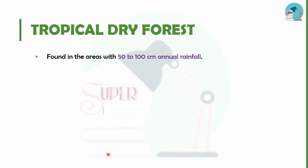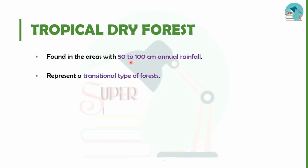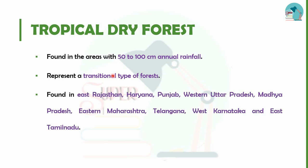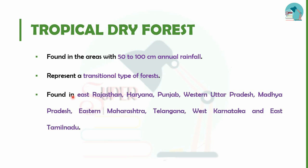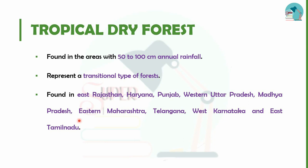The next type is tropical dry forest. Rainfall here is 50–100 cm, making it a transitional type of forest. It is found in East Rajasthan, Haryana, Punjab, Western Bangladesh, Madhya Pradesh, East Maharashtra, Telangana, West Karnataka, and East Tamil Nadu. Tree species here include Mahua, Banyan, Amaltas, Palash, Haldu, Khair, Bamboo, Babool, and Harra.